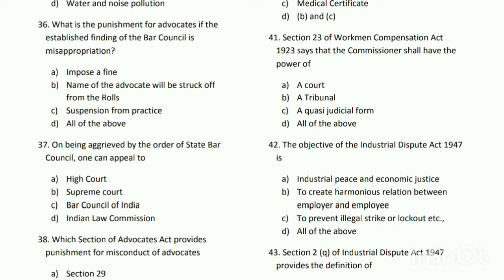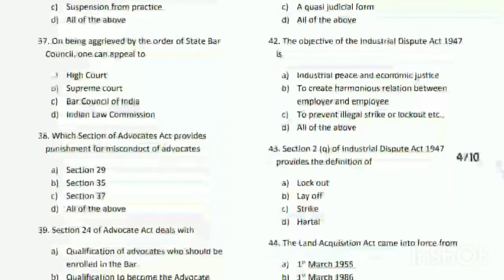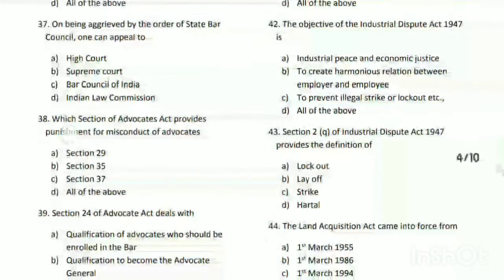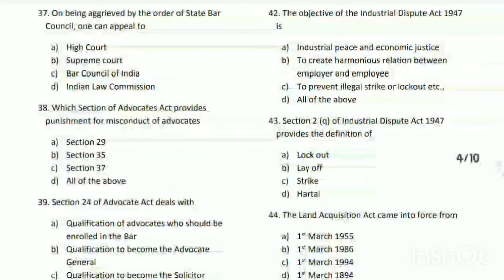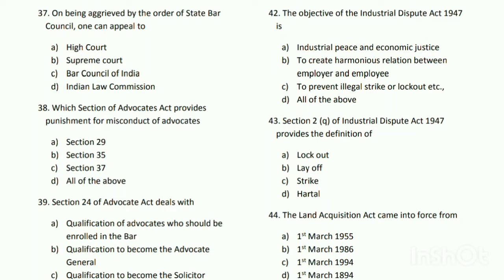Question number thirty-seven: on being aggrieved by the order of the State Bar Council, one can appeal to whom? The answer is C - the Bar Council of India.